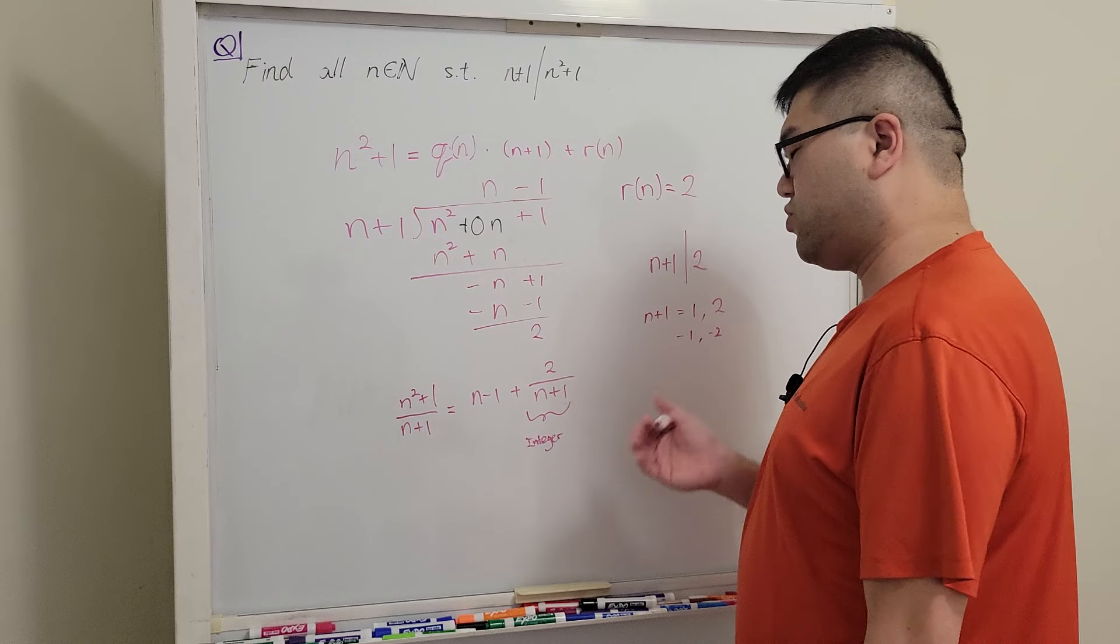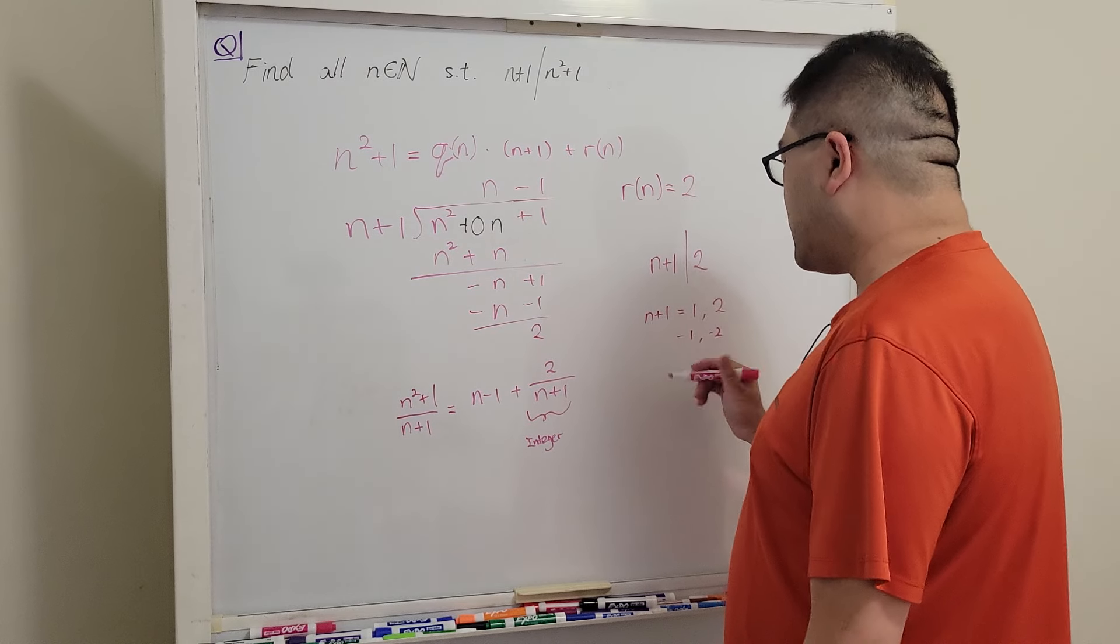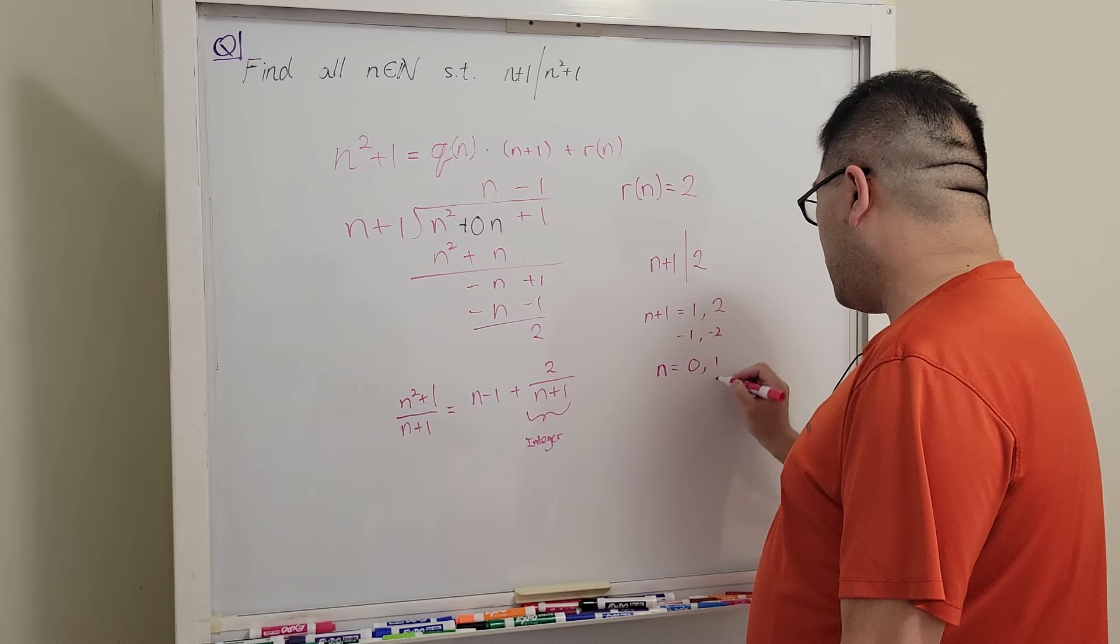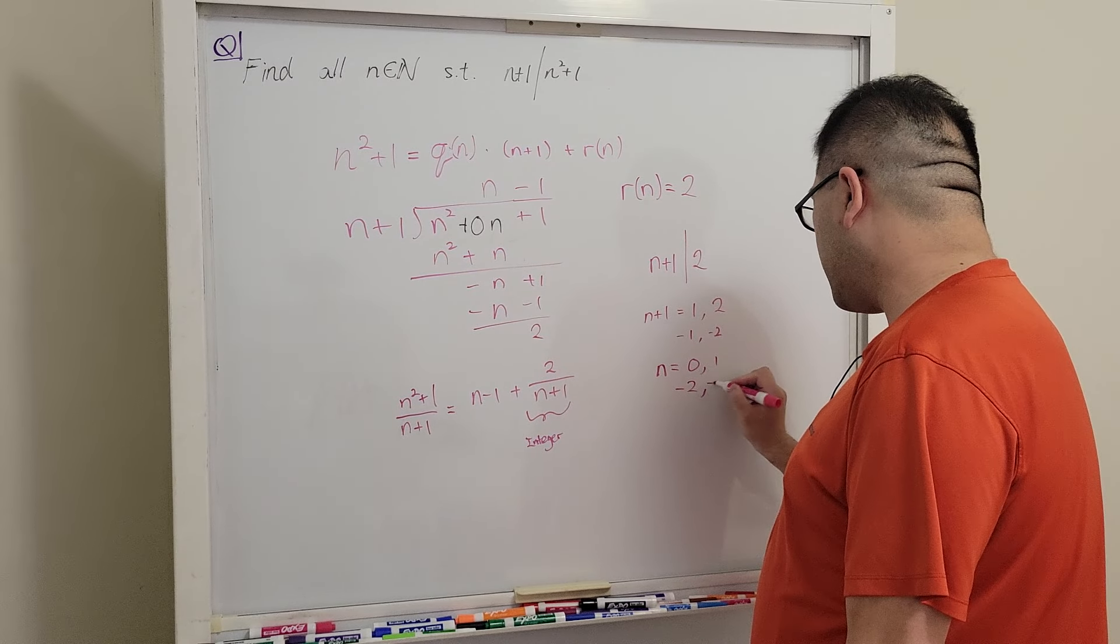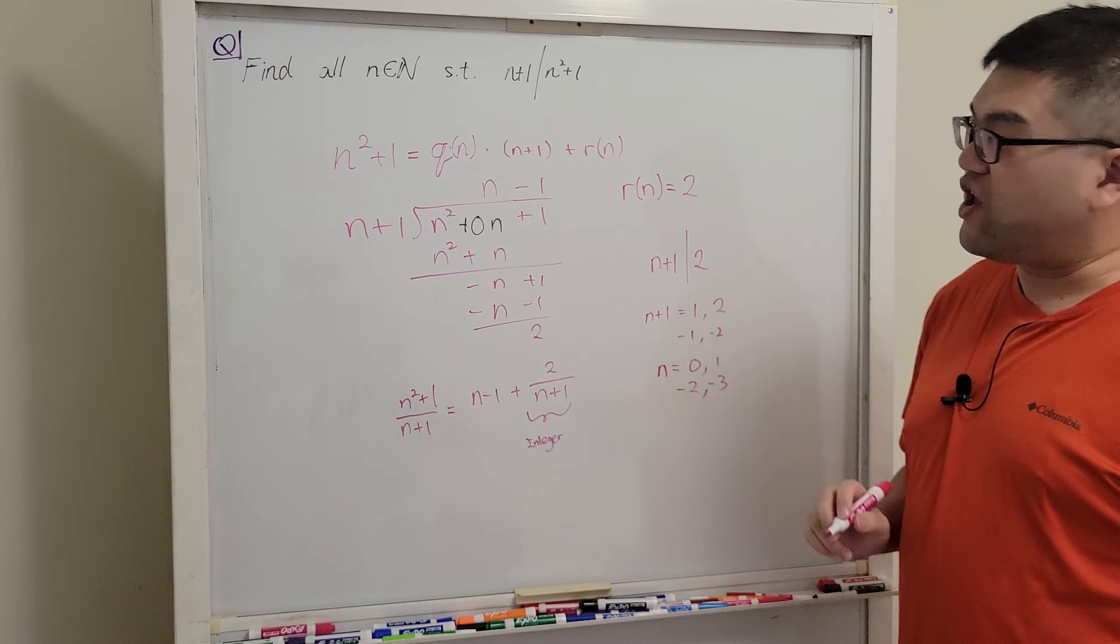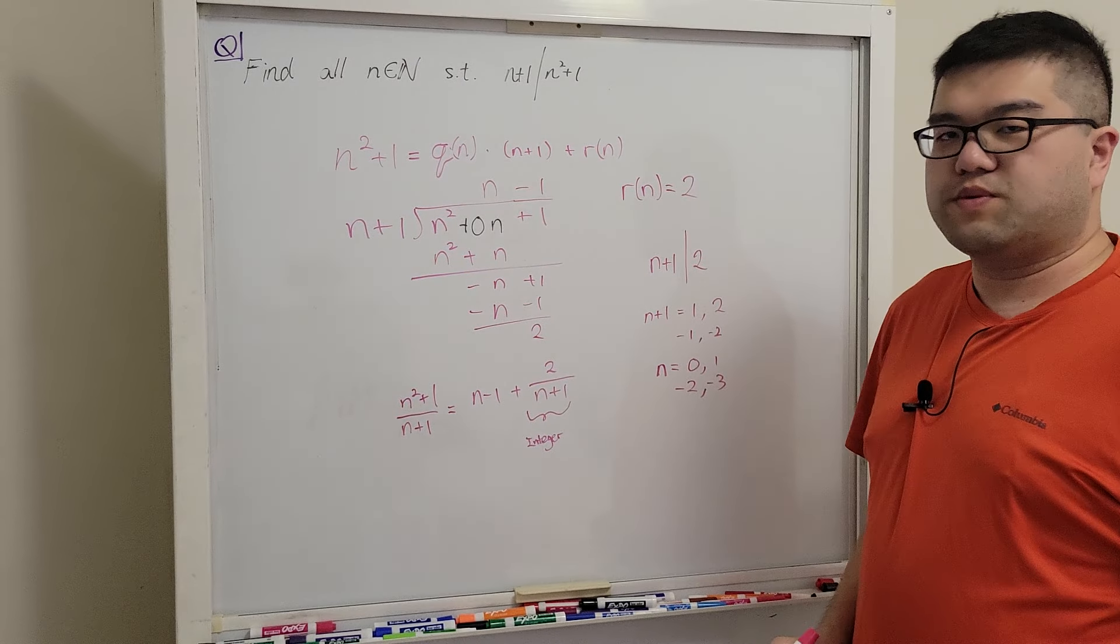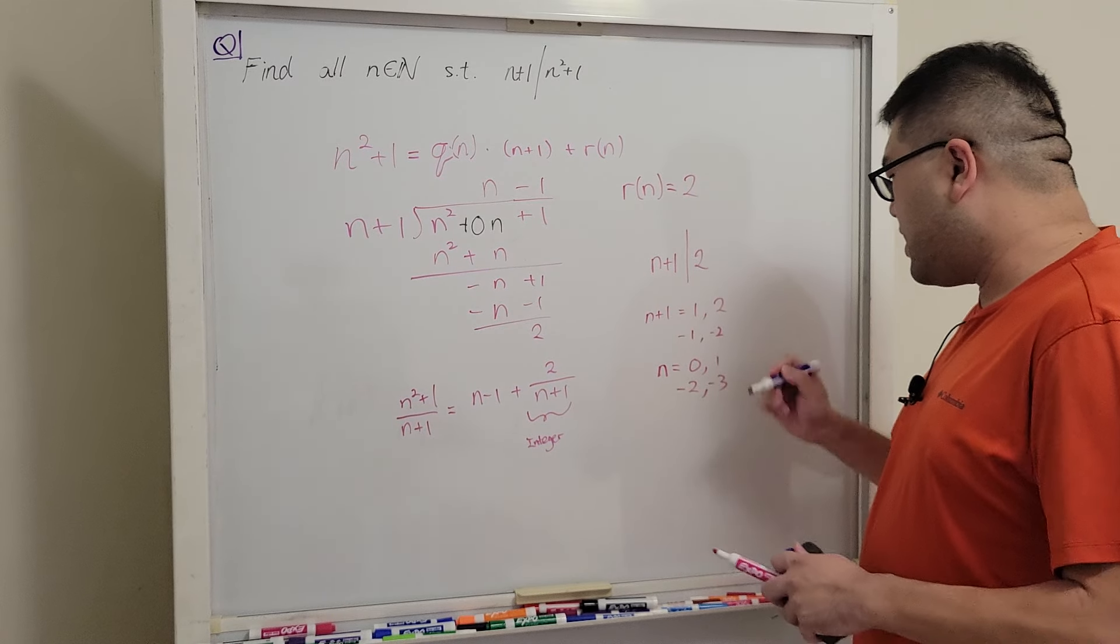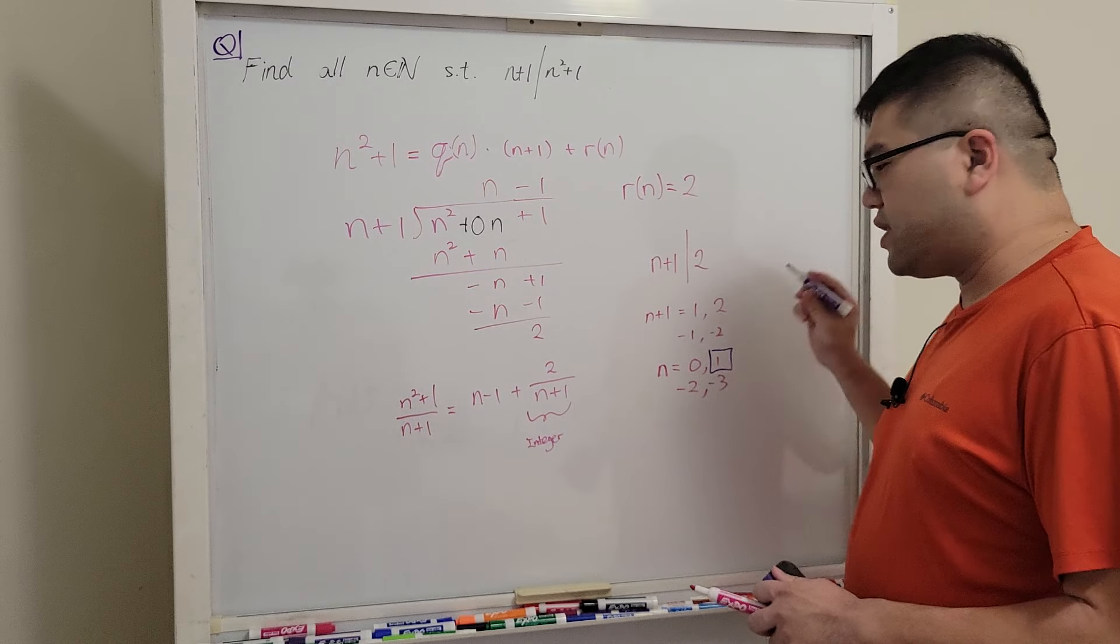Now if we try to solve for n from here, we get n is either 0, 1, negative 2, and negative 3. But since the question is asking for positive integers, what is the only option that we have? The only option that we have will now be n equals 1, and that's it.